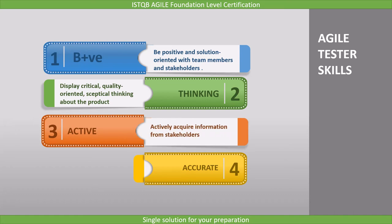The next point is active. The tester must have the ability to actively acquire information from stakeholders. That means if there is any information which is not available, they must discuss with the stakeholder and acquire that necessary information.